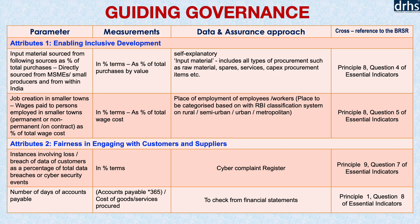Here we describe the core indicator related to governance in ESG. The governance factor for enabling inclusive development has cross-references to BRSR principle 8, question 4 of essential indicators. It is largely focused on input material sourced from MSMEs or small producers and from within India, as a percentage of total purchases. It also considers job creation in smaller towns — wages paid to persons employed in smaller towns, whether permanent, non-permanent, or on contractual basis — as a percentage of total wages cost, with cross-references to BRSR principle 8, question 5 of essential indicators.